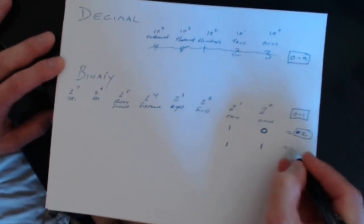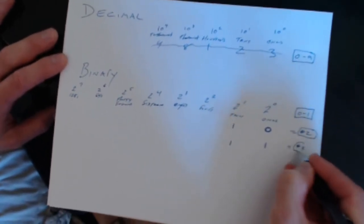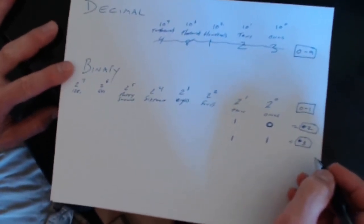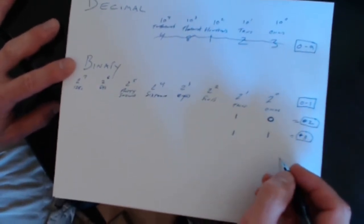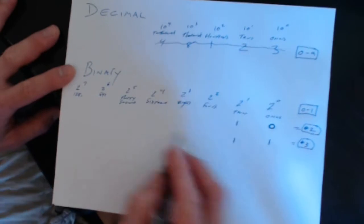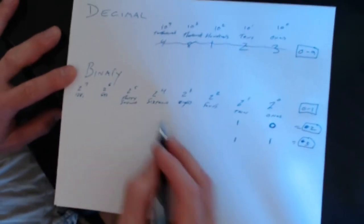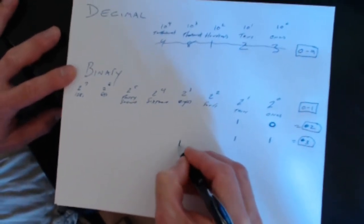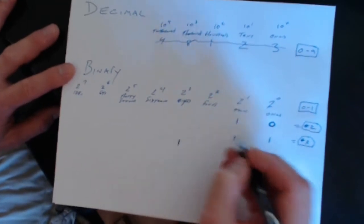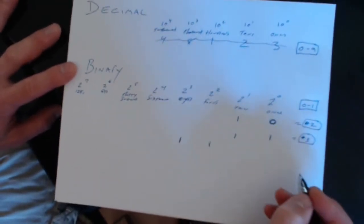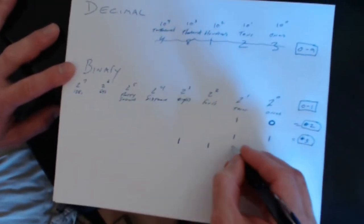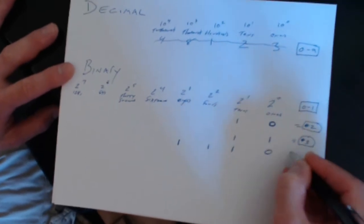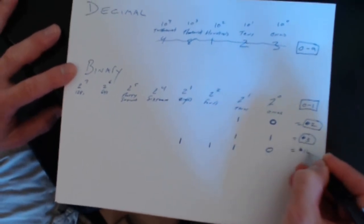What if we wanted to write the number 14? Well, 14 is less than 16 so we don't need a 16. We take one 8 and one 4 — that's 12 — then one 2 — that's 14 — and we don't need any 1s. So 14 in binary is '1110'.